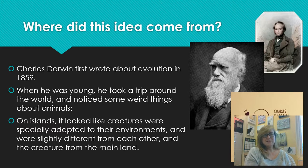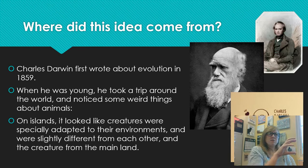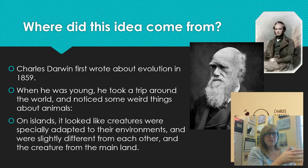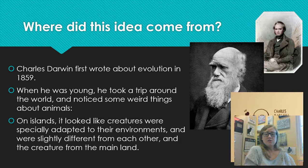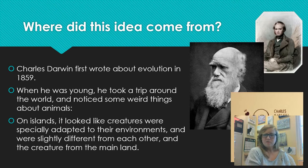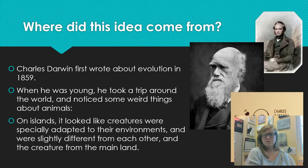He noticed a turtle species in South America was very similar to the one on the island, but the island one was much bigger. On this little cluster of islands, some turtles had rounded shells and ate grasses off the ground, while others had weird saddle-shaped shells so they could stretch their necks out to reach the tops of cactus pads. Then he found what he thought were all different species of finch, but they were all finches — like the mainland South American finch. Some had big fat beaks, some had long beaks; some were on cactus, on the ground, or in the trees; some ate worms, some ate seeds. Why were they so different? That really got him thinking.